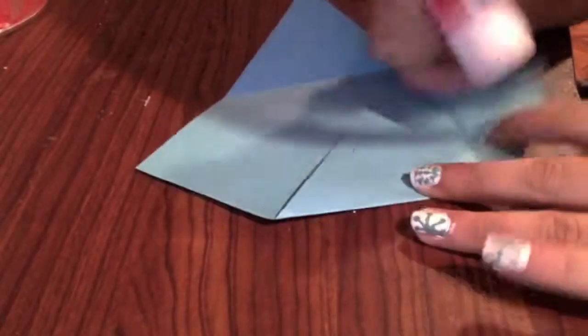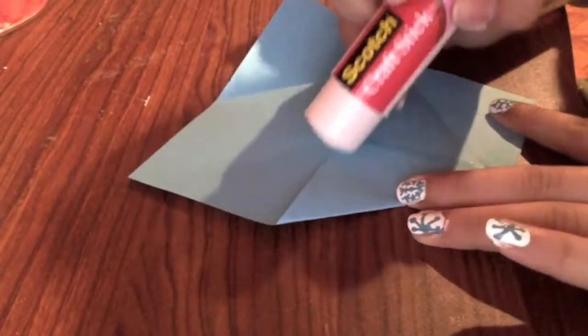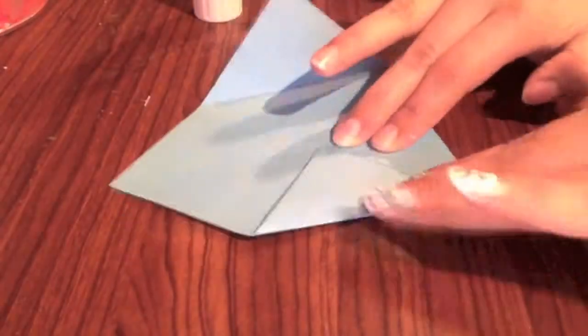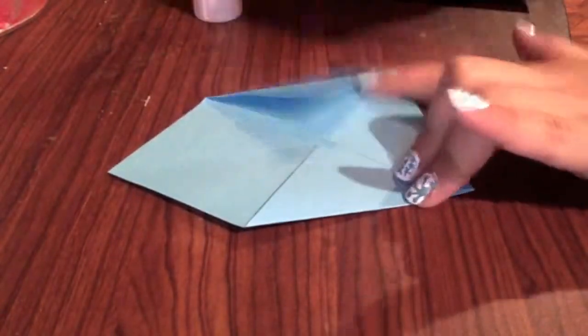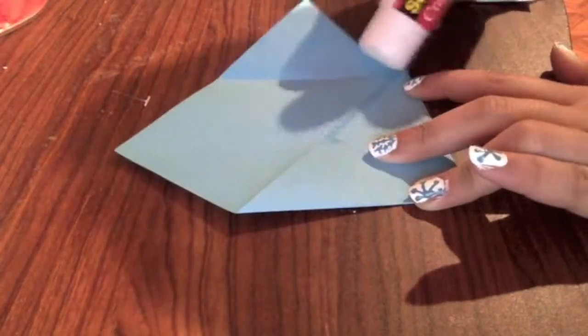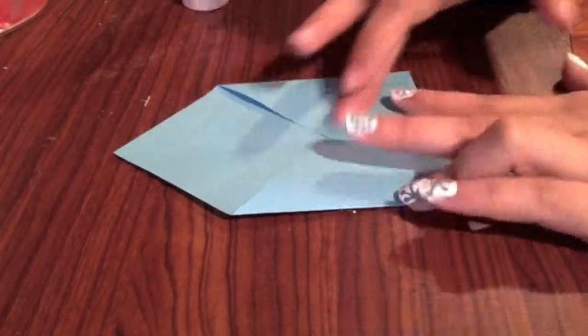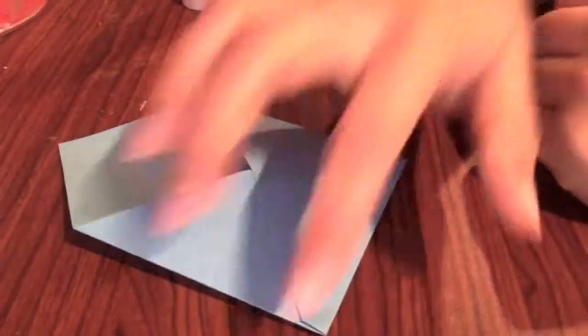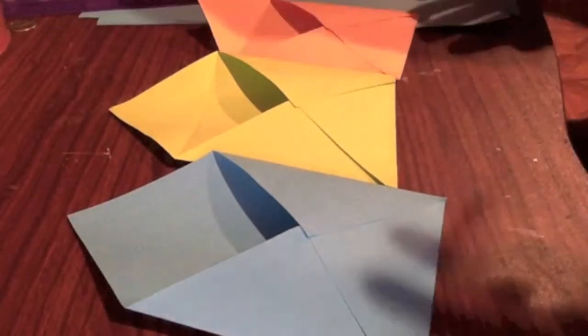For the final step, we're going to glue all the sides. Put glue on the ends and try to get those corners really good so it could stick. These are your envelopes. Just let them dry and that's it.